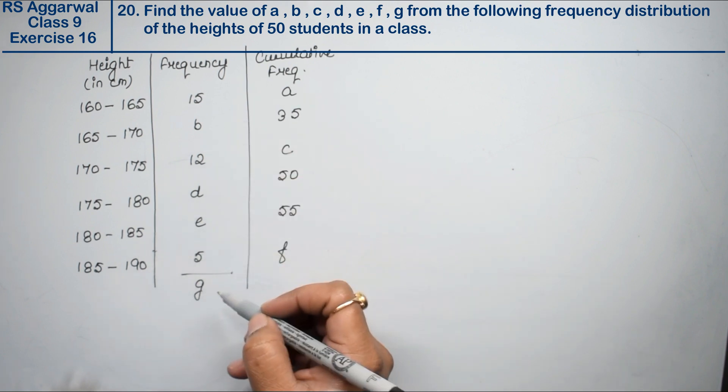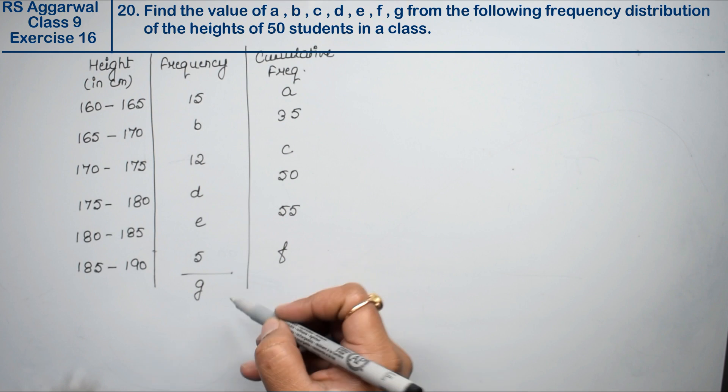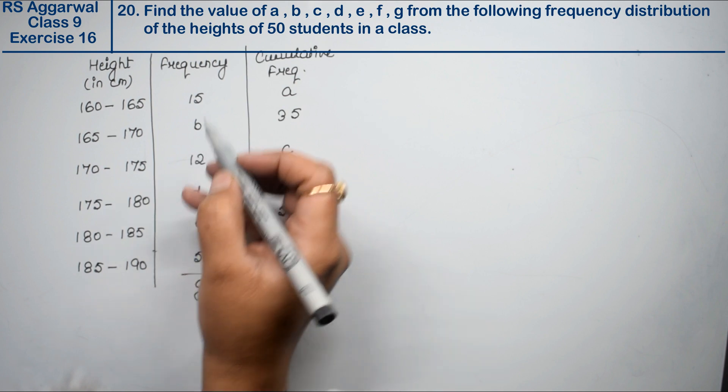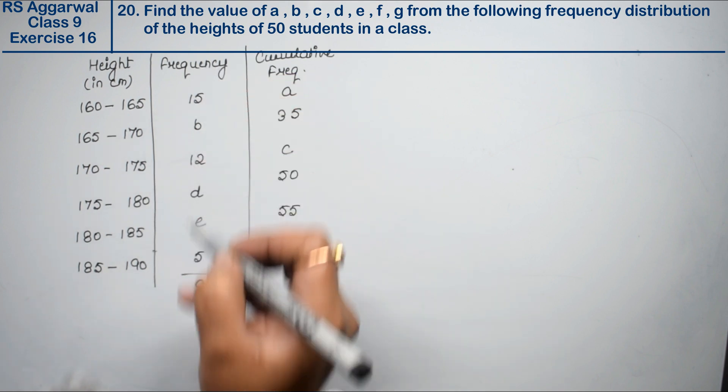Friends, we have the frequency distribution of height and all the values. How can we get out of here? I have told you that frequency as it is, but what is cumulative?